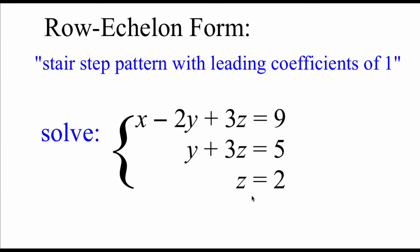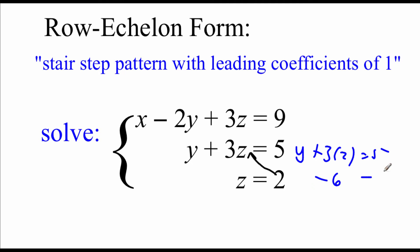Our last equation tells us what our z value is. So we take that z value and plug it back into the next equation up. We'd get the equation y plus 3 times 2 equals 5, and then we solve that. 3 times 2 is 6, and if we subtract that 6 over to the other side, we'd get y equals negative 1.